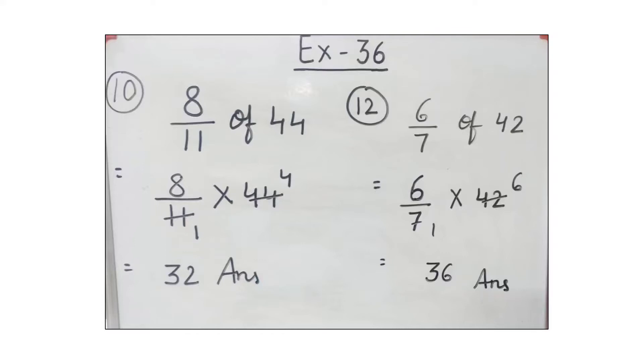Can we cancel 11 and 44? Yes, by table of 11: 11 ones are 11, 11 fours are 44. Now we have 8 and 4 as numerators. Multiply these numerators: 8 times 4 is 32.